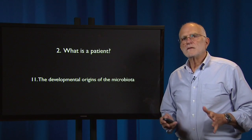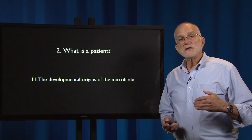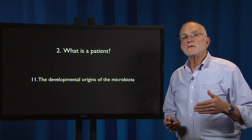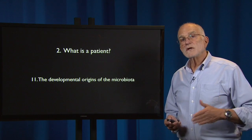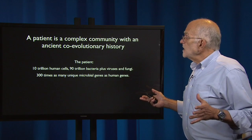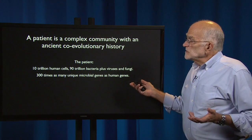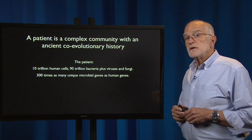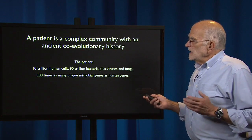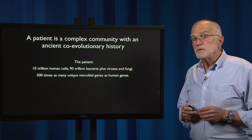Our final look at what a patient is brings in all of the other things that are living in the patient. We can see the difference they make when we look at their developmental origins. A patient is actually a complex community with an ancient coevolutionary history. A patient consists of about 10 trillion human cells, about 90 trillion bacteria, plus uncounted viruses and fungi, and contains at least 300 times as many unique microbial genes as human genes.